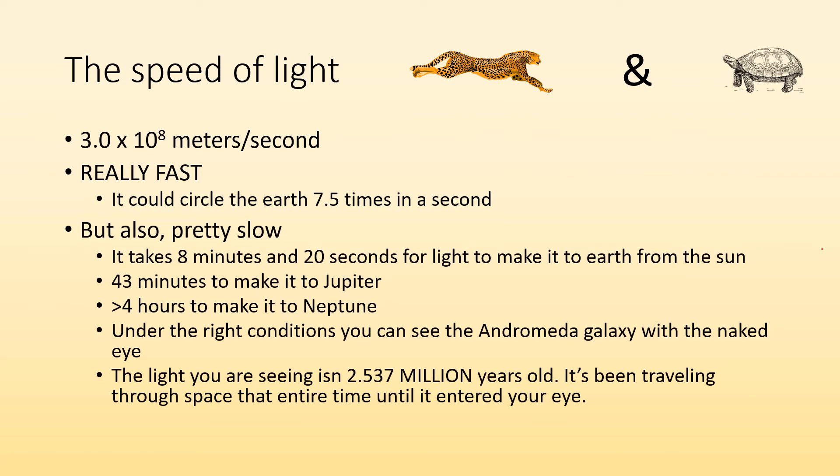But it's also pretty slow when you think about the scale of the universe. So it takes eight minutes and 20 seconds for light to make it to earth from the sun. And it takes 43 minutes for that light to make it to Jupiter.